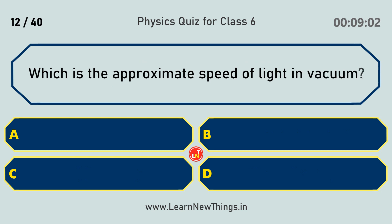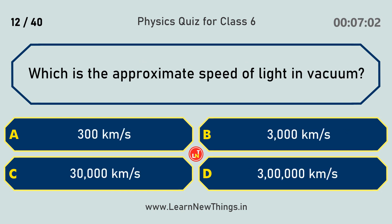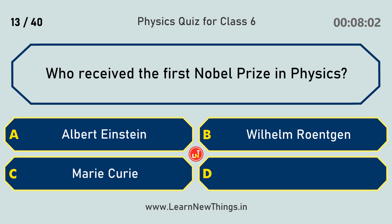What is the approximate speed of light in vacuum? 3,00,000 km per second. Who received the first Nobel Prize in Physics? Wilhelm Röntgen.